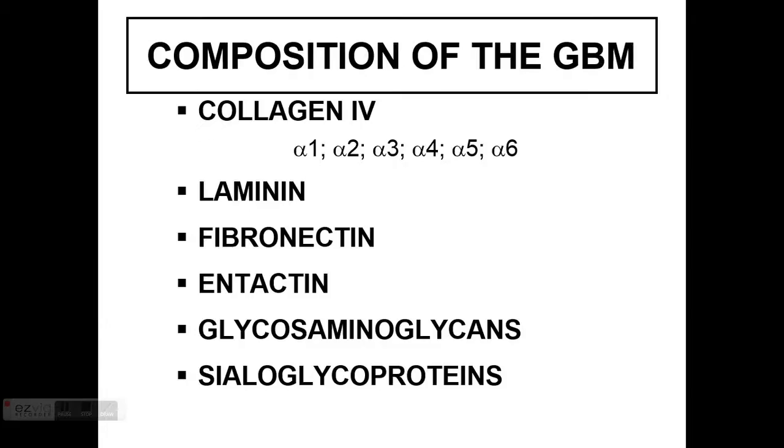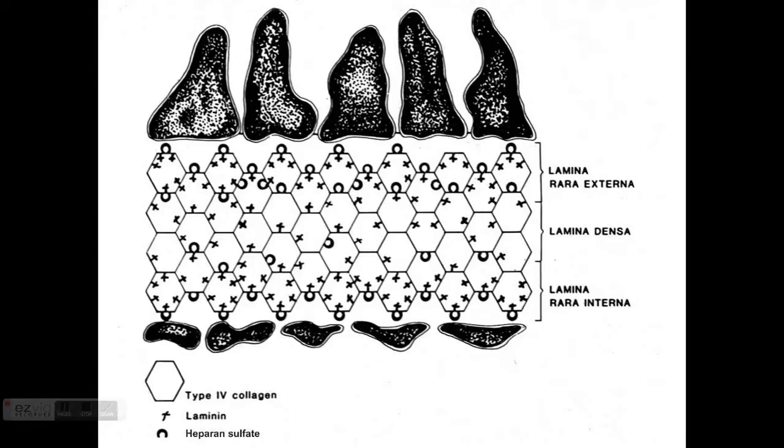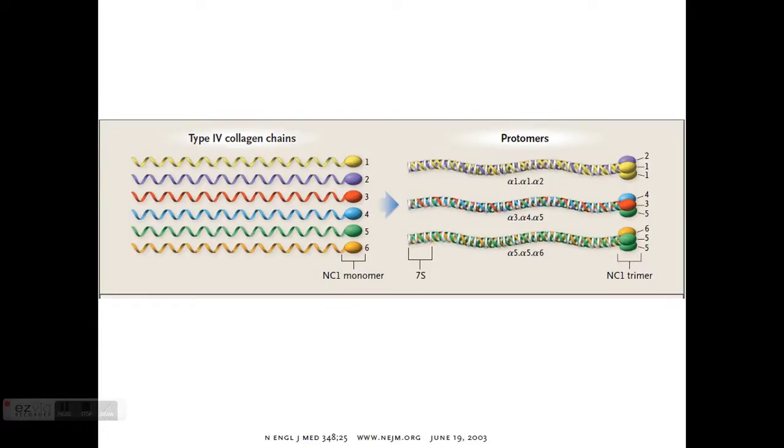The basal membrane is actually composed of different components that you can see here, the main one being collagen 4. Collagen 4 has six alpha chains, 1 through 6, and it forms the main basic GBM structure, so it's the main building block of the GBM. These single chains associate with each other to form different triplets or protomers. The main ones are shown here to the right: alpha 1-1-2, which is the most common protomer, and alpha 3-4-5, which is actually the most important one for the glomerular basal membrane. It's made in a very different fashion and it's a very tough form of collagen 4.